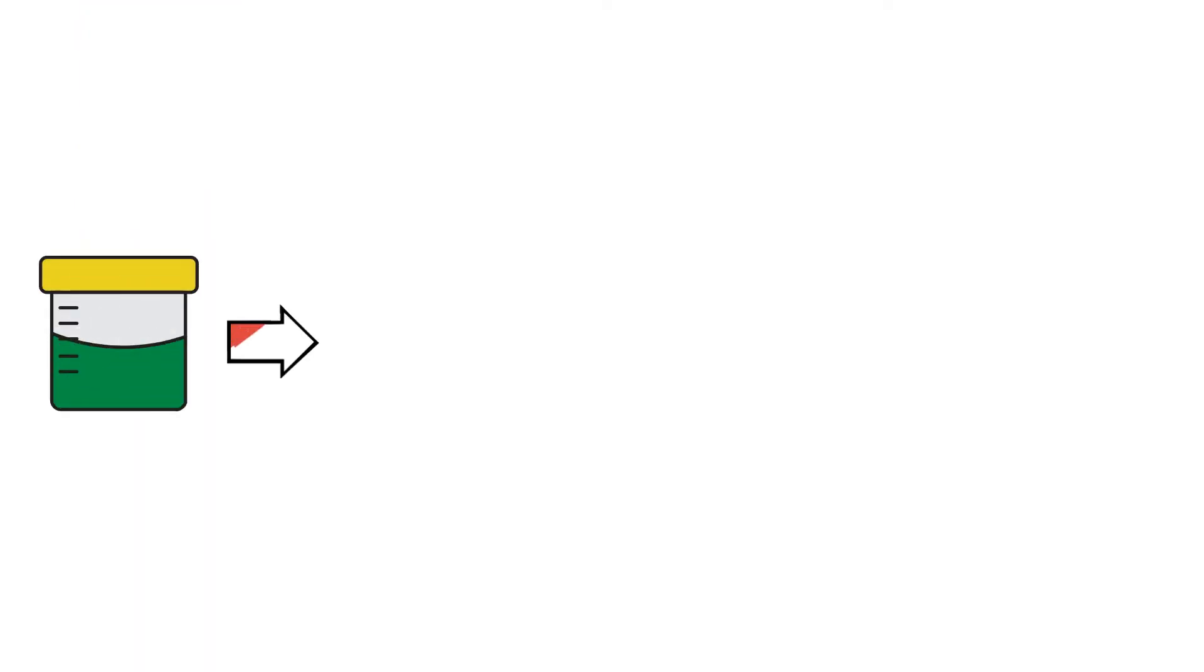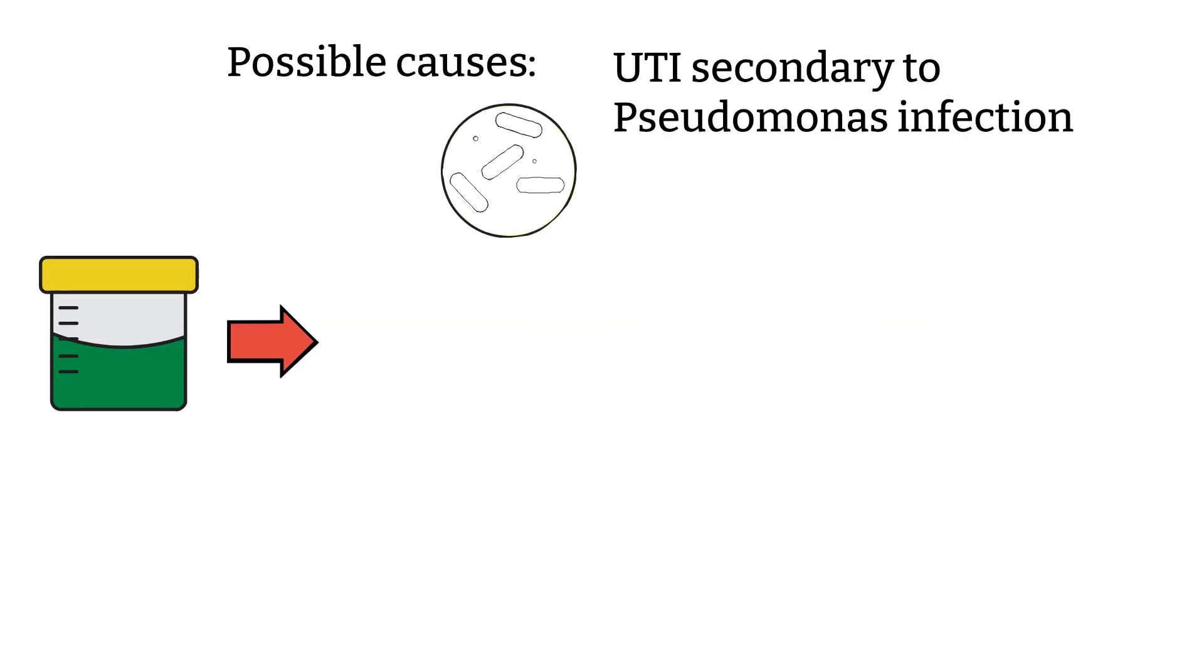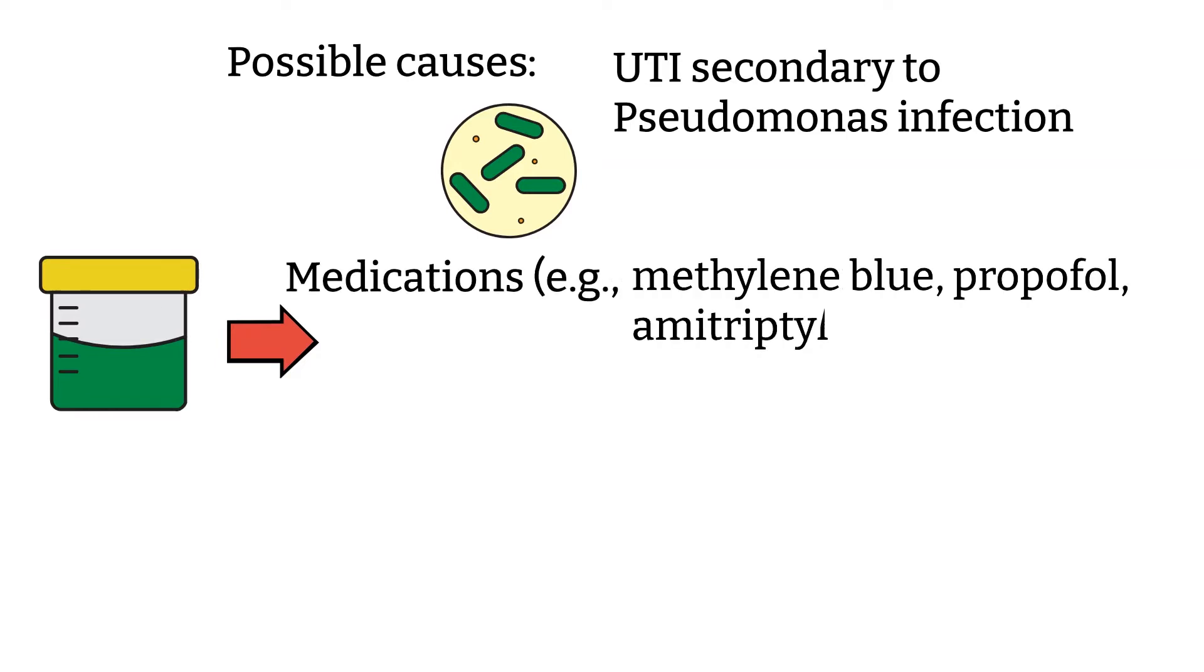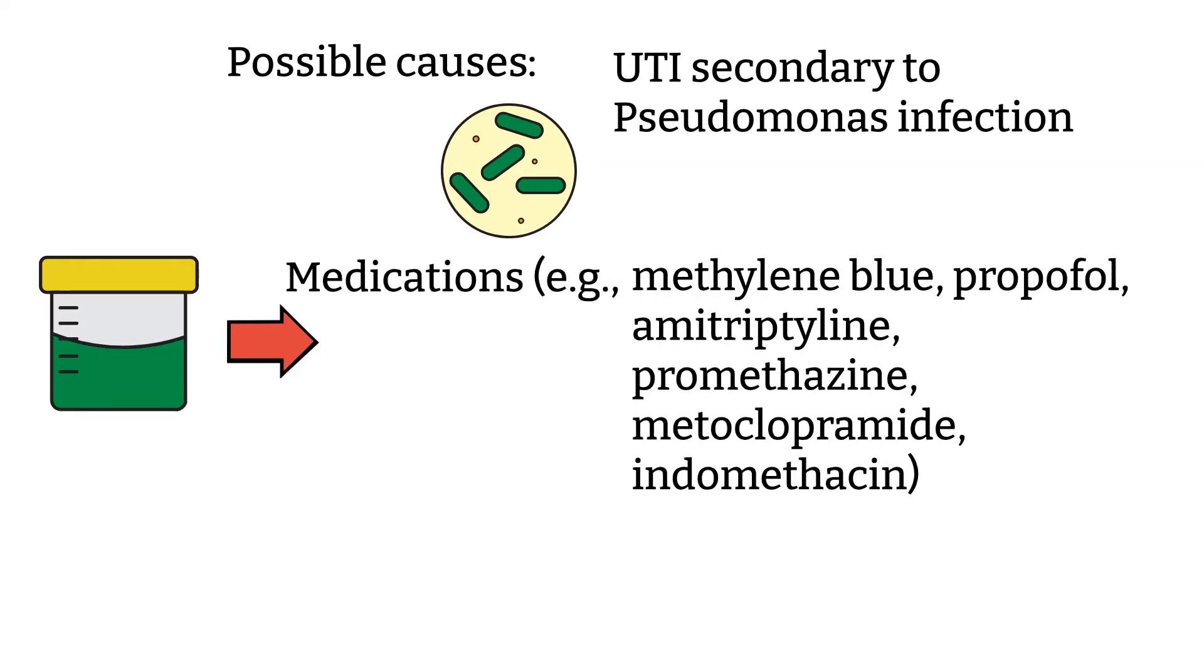Green. Green urine is not very common but can be found in patients with urinary tract infection secondary to pseudomonas infection. Like most other urine colors, patient medications and food consumption play a role here as well.